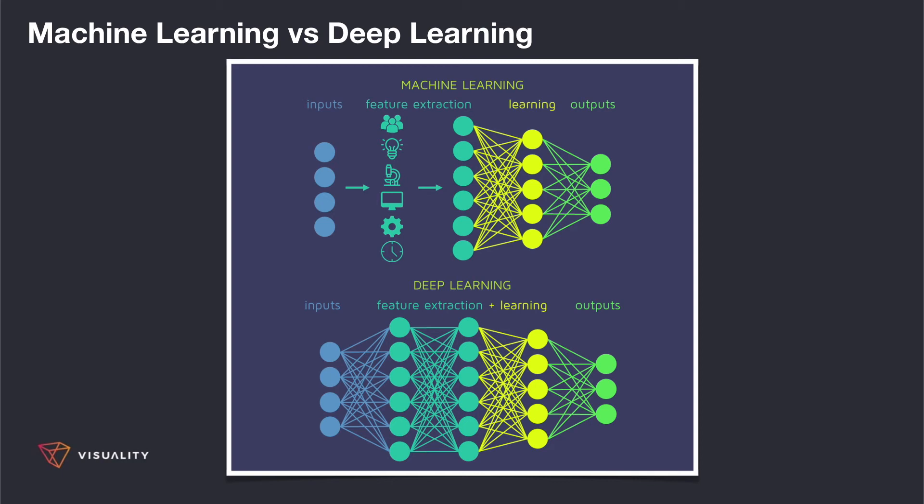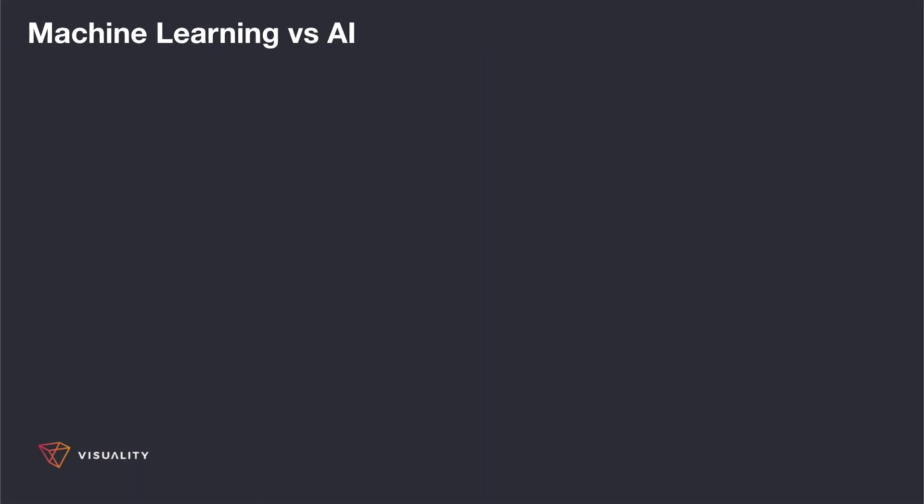Deep learning algorithms automatically take care of the feature extraction. When the input images are fed to the model, it will automatically learn different aspects of the image. It will measure the dimensions of the tomatoes and understand that this is definitely tomatoes. Because of this automatic feature extraction, deep learning models are able to deal with high-dimensional data better than machine learning models.